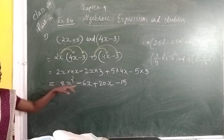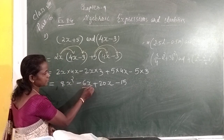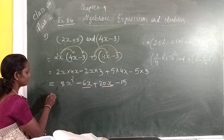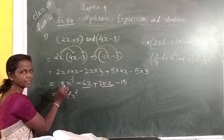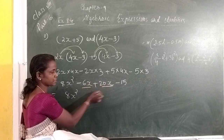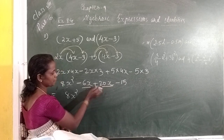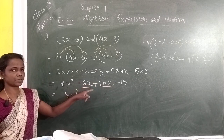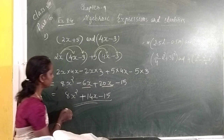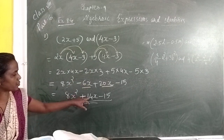Multiplication is completed. Now we look — there are 4 terms total. The like terms are minus 6x and plus 20x. So we add the like terms. 8x squared has no like term, so we write 8x squared. Then minus 6x plus 20x: one is negative and the other is positive, so find the difference and the biggest number's sign. The biggest number is positive, so the answer is positive 14x. Then minus 15. So the answer for 2x plus 5 into 4x minus 3 is 8x squared plus 14x minus 15.